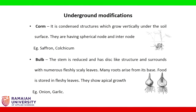Corm: it is a condensed structure which grows vertically under the soil surface. They have spherical nodes and internodes. Examples: saffron, colchicum.